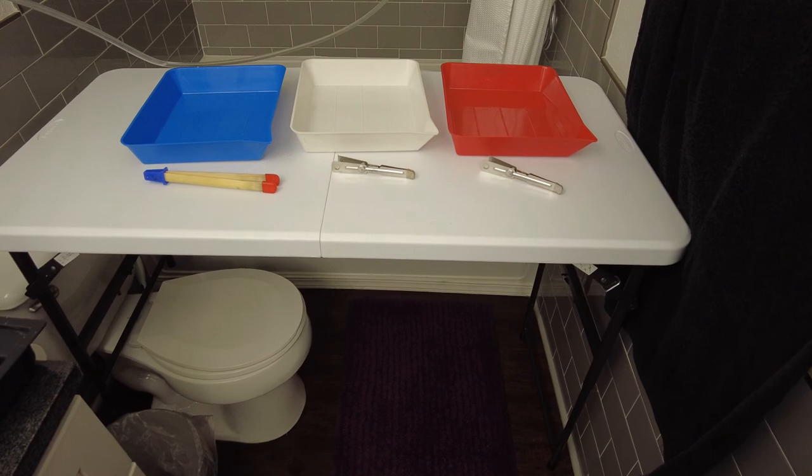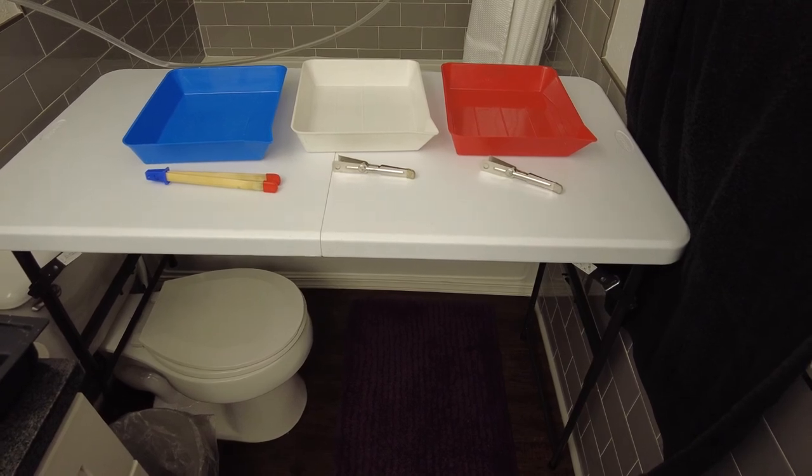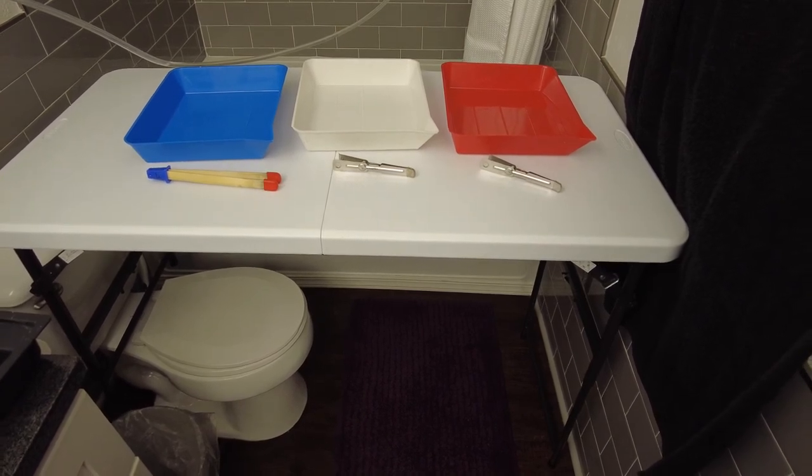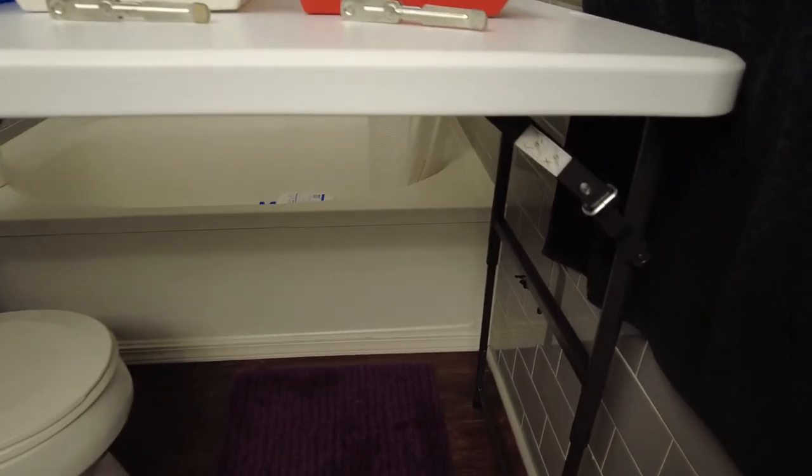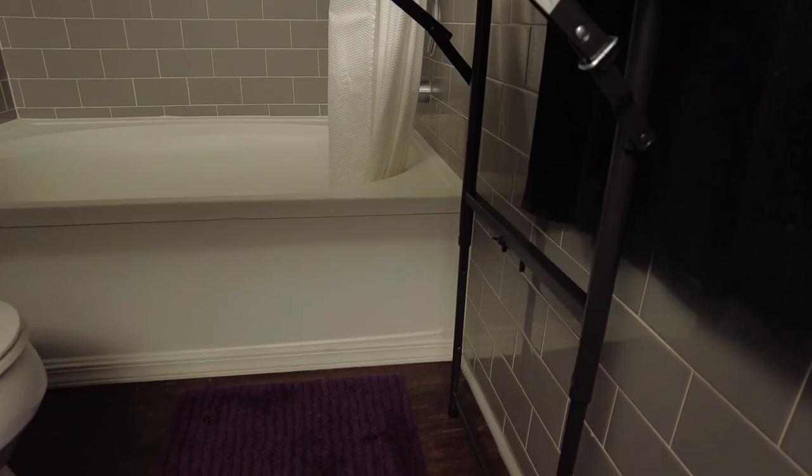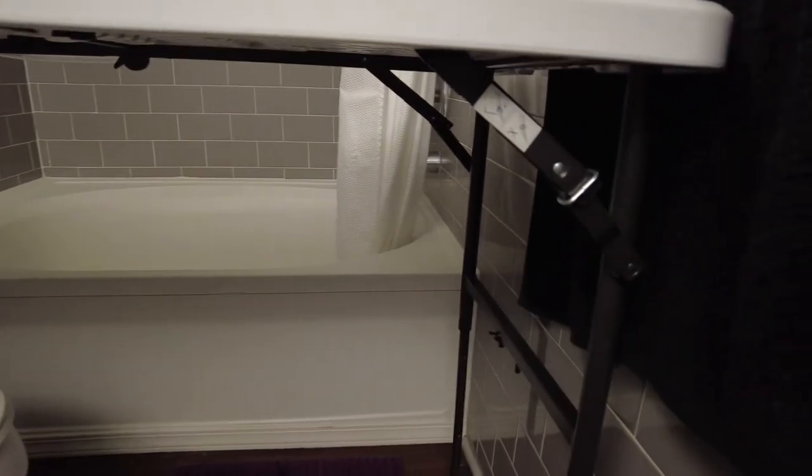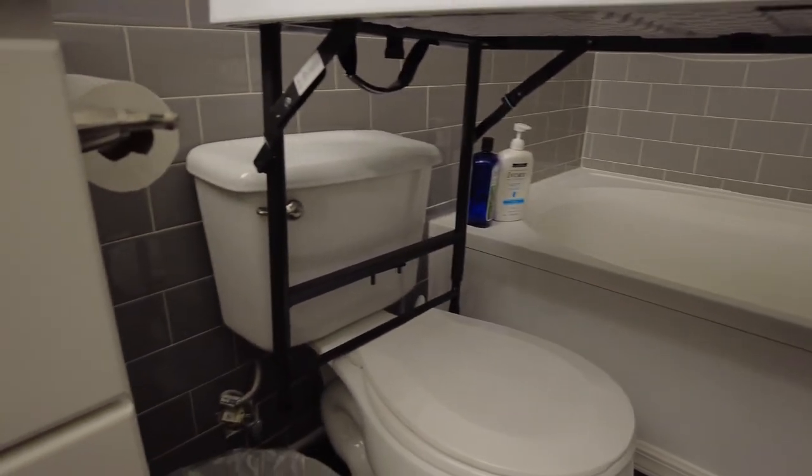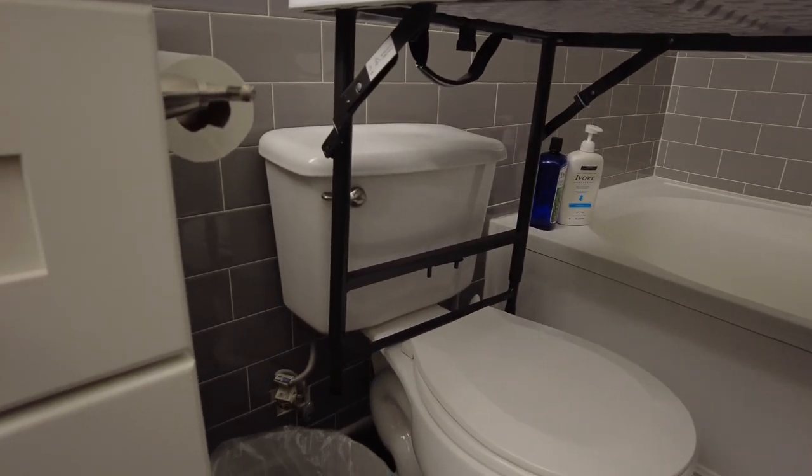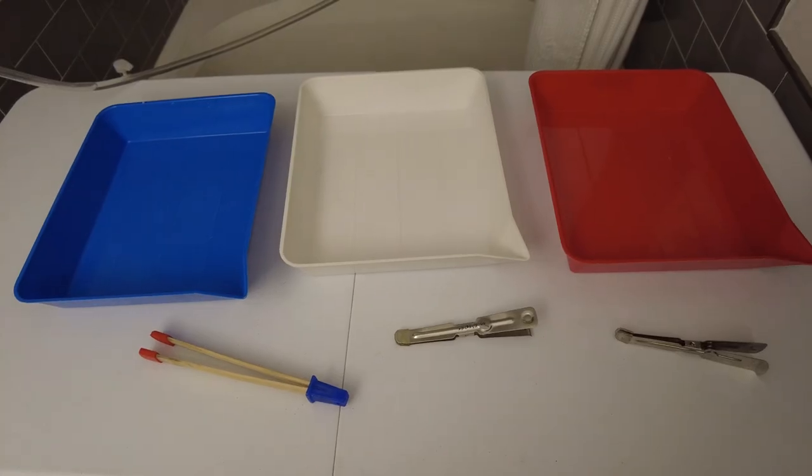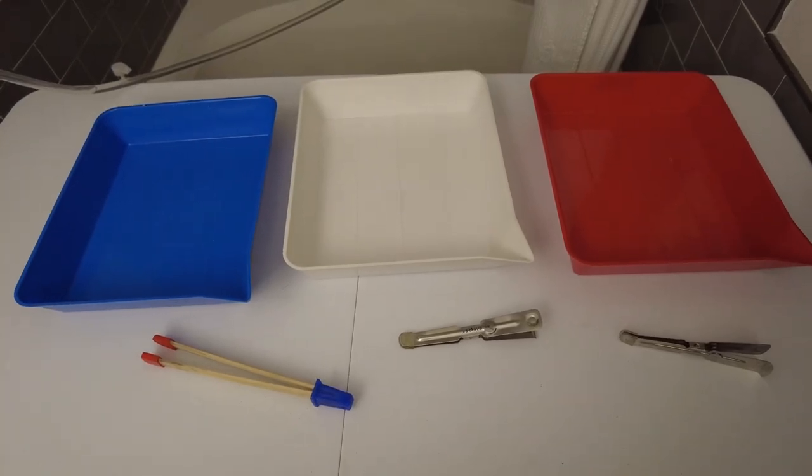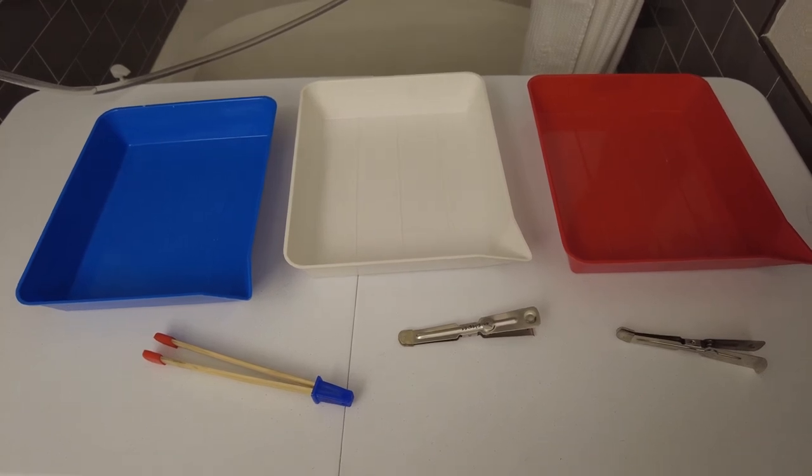We needed some more space to have our trays of chemicals so we got this table from Sam's Club. It extends to be really tall about waist height and here's this side completely extended. What's pretty cool is that if this part's only partially extended it sits on top of the toilet and is perfectly level on top. Some people will just put their trays directly into their bathtub or their shower.